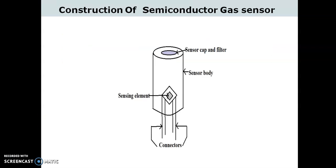Let us see the construction of semiconductor gas sensor. It consists of metal oxide film as a sensing element. The exact metal depends upon the gas to be detected. The film is connected to the electrodes and from the electrodes the connecting wires are taken out for the measurement of resistance. This sensing element is covered with the sensor body having the sensor cap and the filter at the top of its construction.